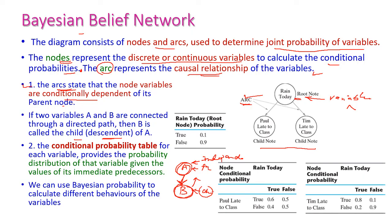The child is called a descendant of the parent node. For each variable in the diagram there is a separate conditional probability table. For example, with three variables — rain today, fall late to class, and Tim late to class — there is a table for rain today, a table for fall late to class with respect to rain, and a table for Tim late to class with respect to rain. We can use these Bayesian probabilities to identify the relationships and behaviors of variables.